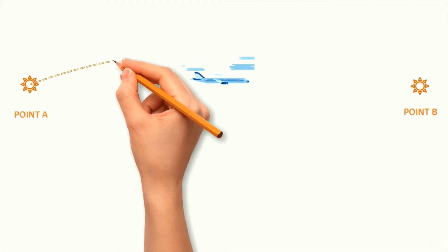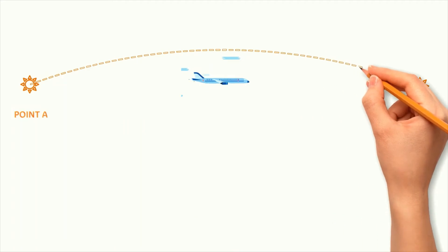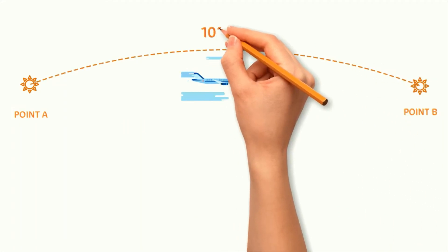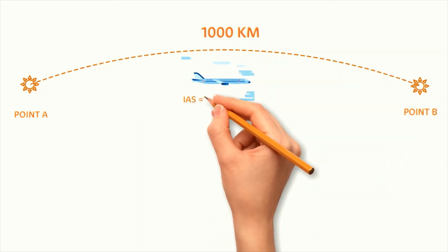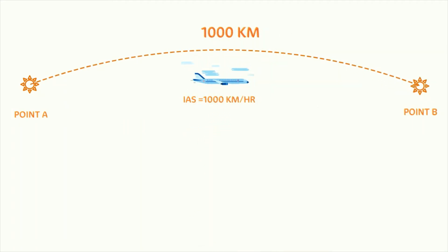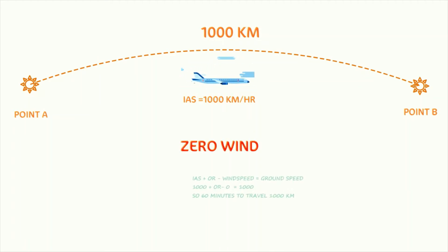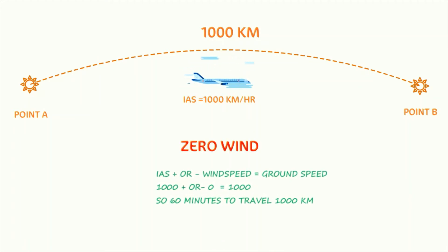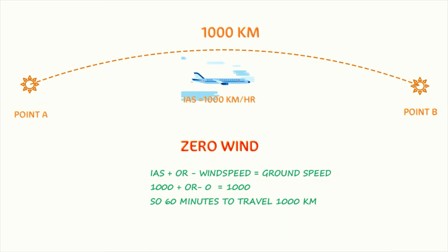Let us consider that our aircraft is flying from point A to point B. The distance between point A and point B is 1000 km, and the aircraft is traveling with an indicated airspeed of 1000 km per hour. If there is no wind, the aircraft will take 60 minutes to reach from point A to point B.